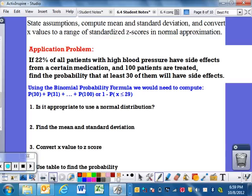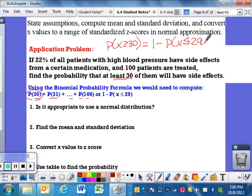Here's an example of where you would not want to go through each individual step. If 22% of all patients with high blood pressure have side effects from a certain medication, 100 patients are treated, what's the probability that at least 30 of them will have side effects? They have side effects or they don't. So this is a binomial situation. Now I want to know at least 30. So the probability that X is greater than or equal to 30. That does not work for me and my normal distribution table because I need less than 30. So that's the complement. Instead of adding up each one individually, which you'd have to use your table 30, then 31, then 32, we don't want to do this.